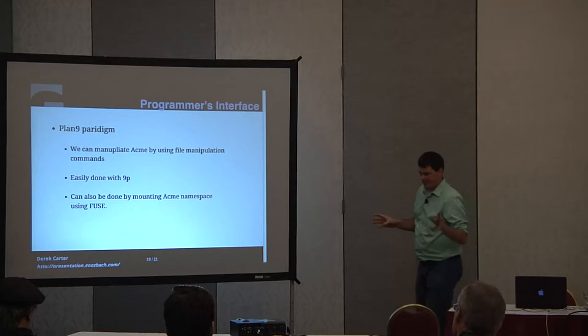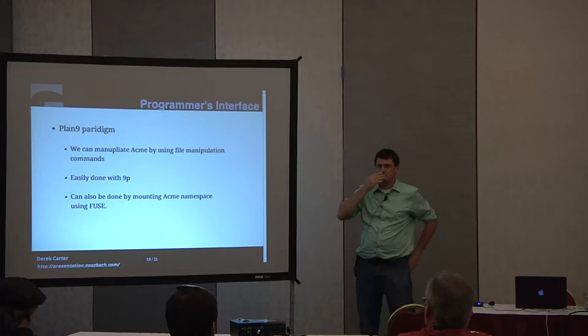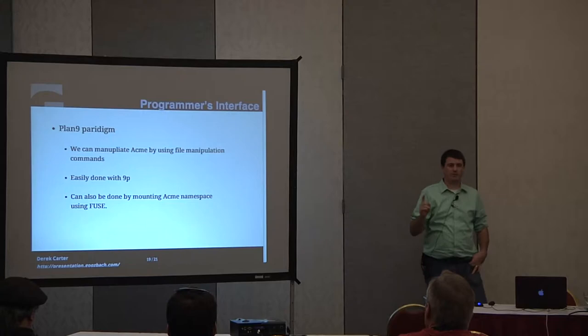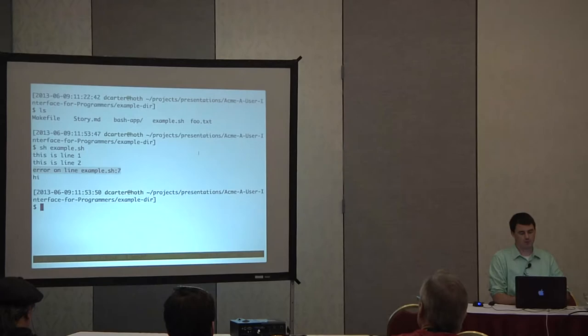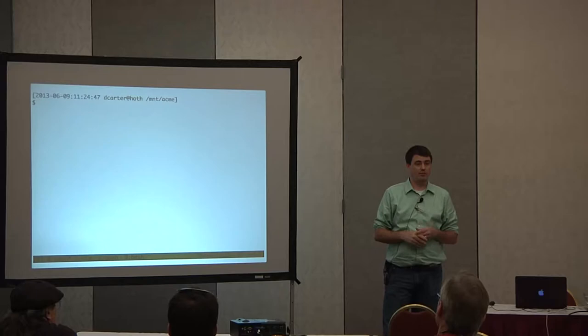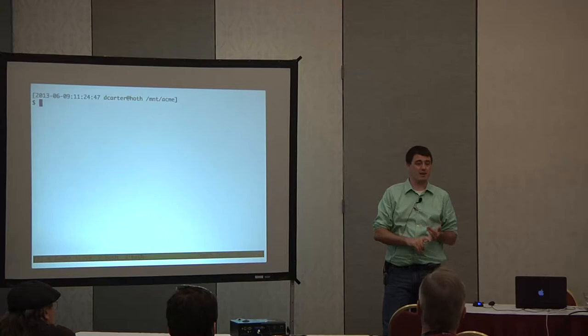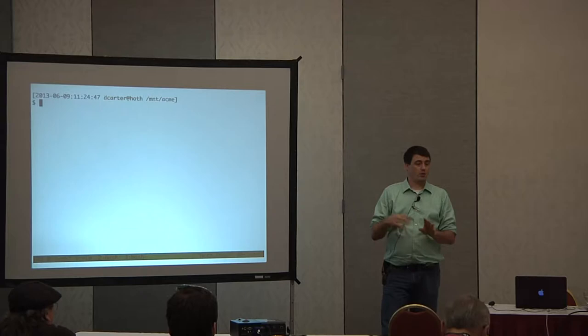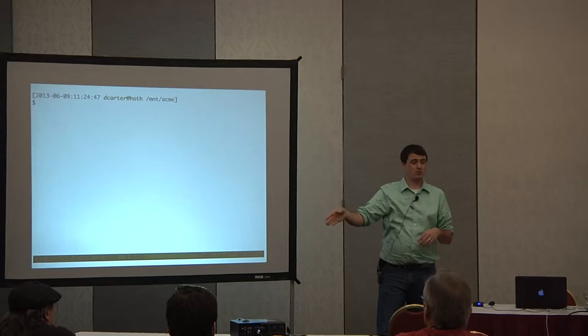ACME is a programmer's interface. It means we can manipulate ACME by using file manipulation. Going back to Plan 9 — Plan 9 is a network-agnostic file system. Everything in Plan 9, every file activity, happens over a protocol called 9P, or 9P2000 to be specific, even if it's local or remote. You don't know if your file is on this machine or halfway across the country. It's network-agnostic and a distributed environment.